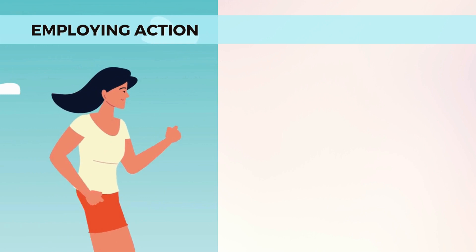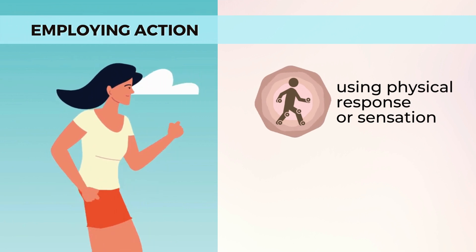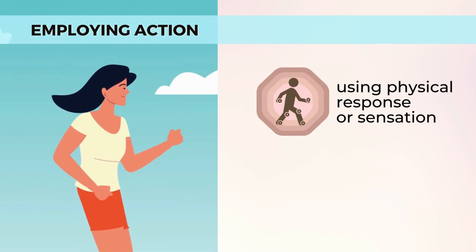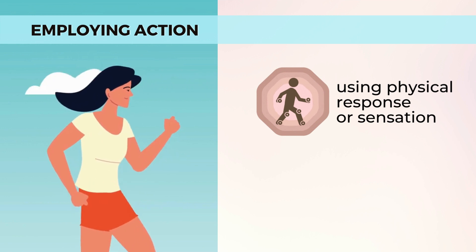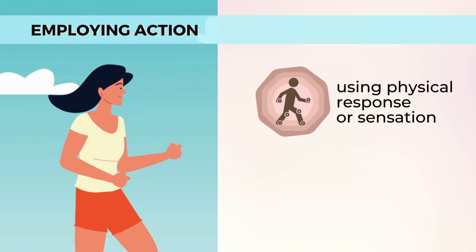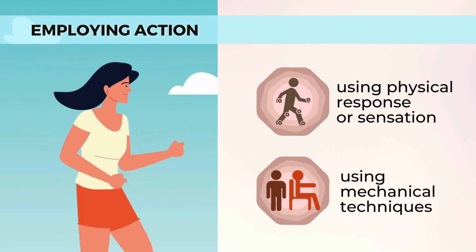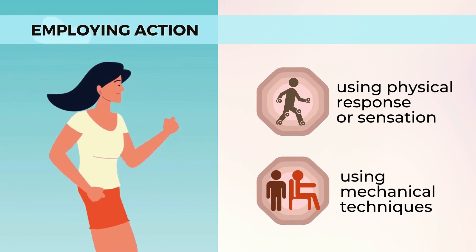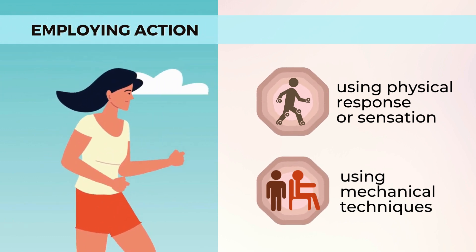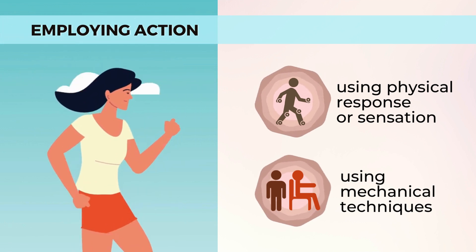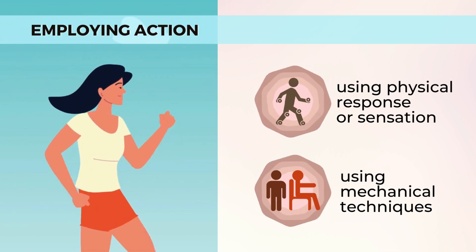Finally, employing action. The first type under this is using physical response or sensation — physically acting out a new expression, for example, going to the door, or meaningfully relating a new expression to a physical feeling or sensation, for example, warmth. The second type is mechanical techniques: creative but tangible activities employed to remember new target language information, such as writing words on cards and moving cards from one stack to another when a word is learned, and putting different types of material in separate sections of a language learning notebook.